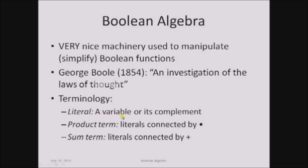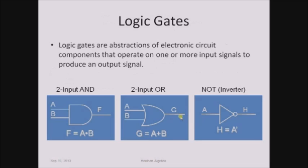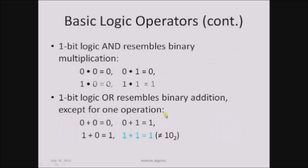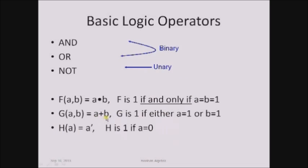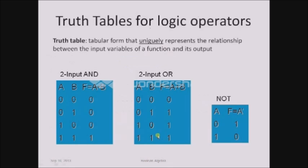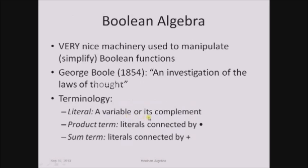What is a literal? A literal is a variable or its complement. Looking at the previous slide, A and B are literals, and A complement is also a literal. So A, A complement, B, B complement, C, C complement, and so on — all of those are literals. A product term consists of literals connected by the AND symbol, so the output expression of an AND gate, f = A AND B, is a product term. A sum term consists of literals connected by the OR symbol, so the output of an OR gate, A OR B, is a sum term. These are the three terms we basically use throughout Boolean algebra.